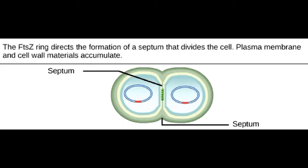The formation of a ring composed of repeating units of a protein, FTSZ, directs the partition between the nucleoids.